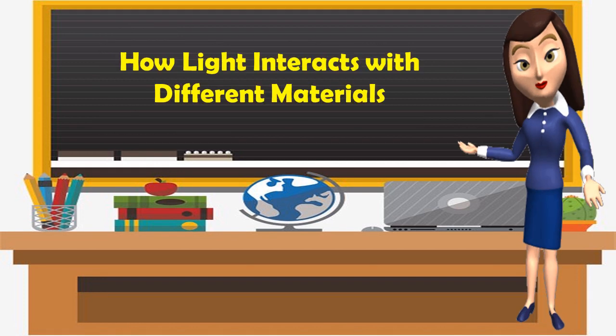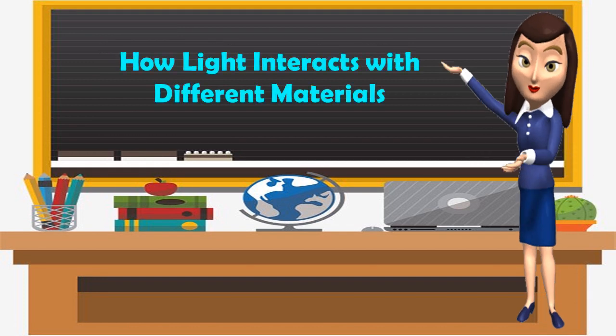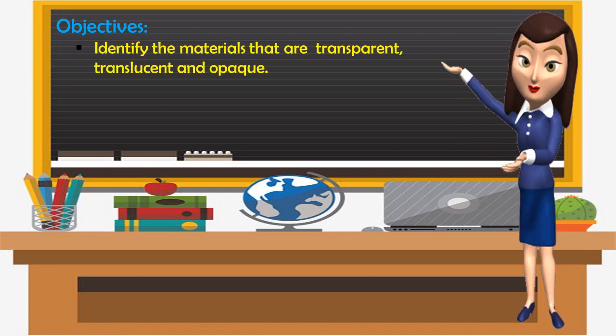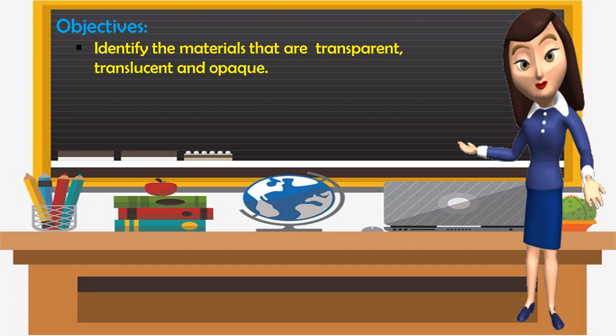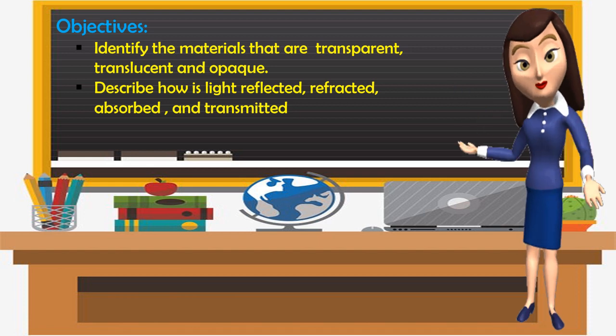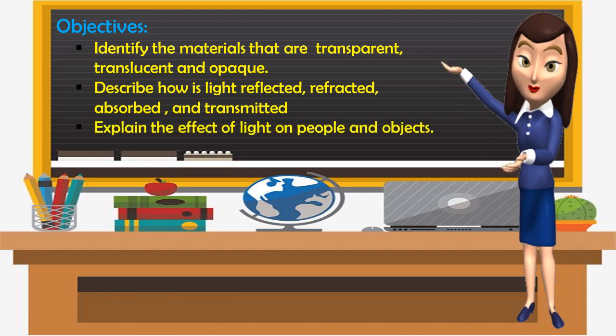Our lesson for today is about how light interacts with different materials. The objectives of this lesson are: you are expected to identify materials that are transparent, translucent, and opaque; describe how light is reflected, refracted, absorbed, and transmitted; and explain the effect of light on people and objects.